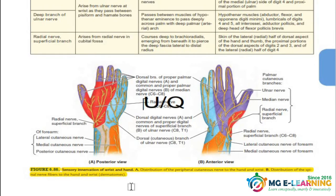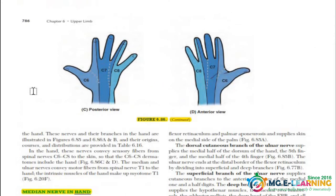This is the cutaneous innervation of the hand — you have to learn this diagram for SCQs. The question usually asks you to draw the cutaneous innervation of the hand, so you should know the area of distribution and the nerves supplying each area. The dermatome of the hand is also important and does come in exams.